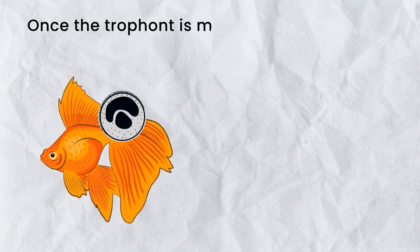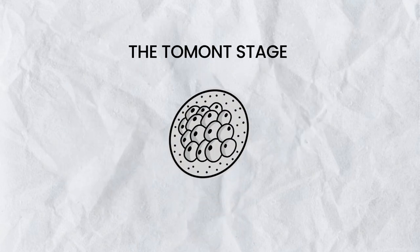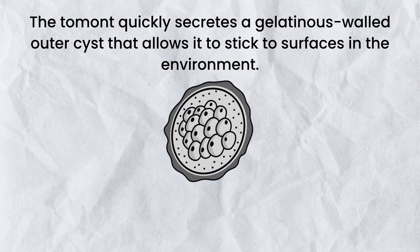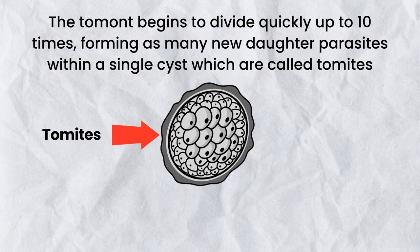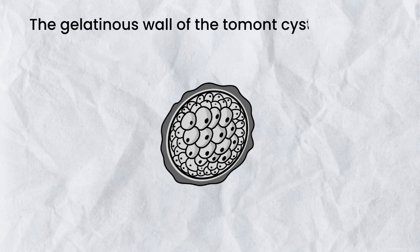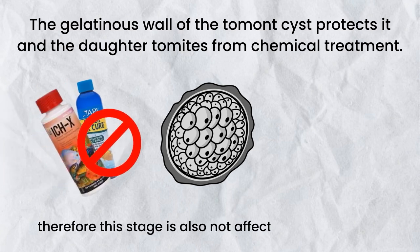Once the trophont is mature, it stops feeding, leaves the fish, and becomes a tomont. The tomont quickly secretes a gelatinous-walled outer cyst that allows it to stick to surfaces in the environment. The tomont begins to divide up to 10 times, forming as many as hundreds of new daughter parasites — called tomites — within a single cyst. This can occur in 18 to 24 hours at warmer water temperatures near 25°C. The gelatinous wall of the tomont cyst protects it and the daughter tomites from chemical treatment, so this stage is also not affected by treatments.